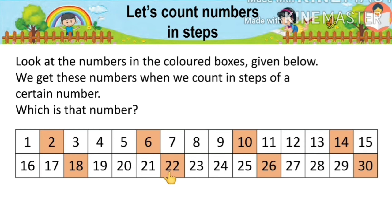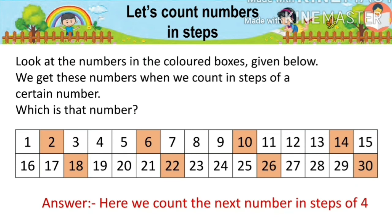Again we go to the next number, twenty-six. We count one, two, three, and four steps. The last number is thirty — we count one, two, three, and four steps to reach thirty. The answer is: we are counting the next number in steps of four. That number is four.